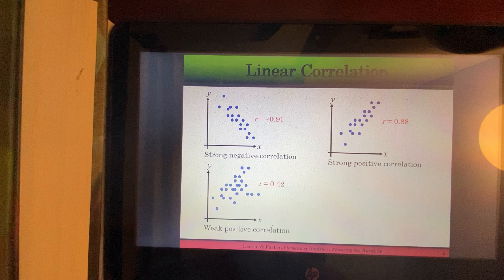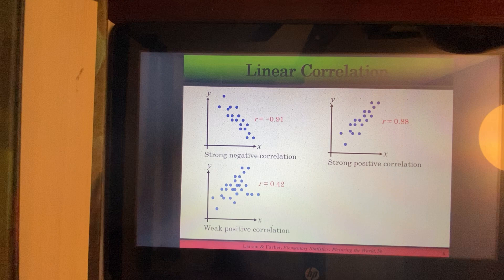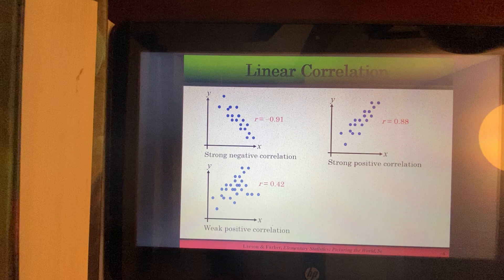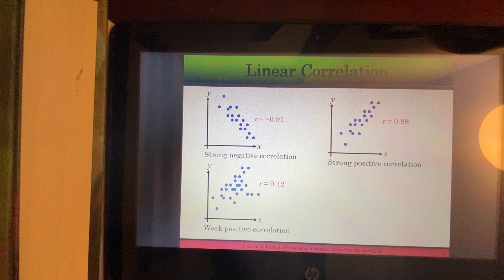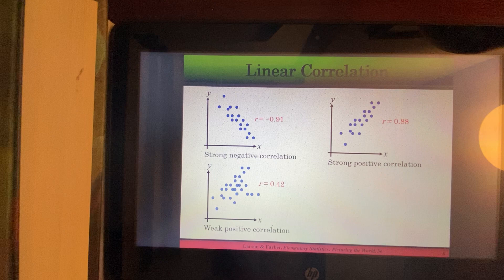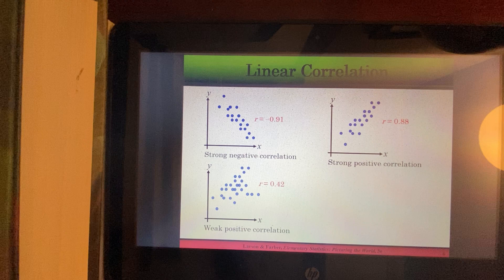Now we're looking at an example of positive correlation because as X is increasing, Y is also increasing. But if we drew a straight line through this data, the points would be farther from the line. So there's more variation going on here. And this would be an example of a weak positive correlation. R is positive 0.42. So we're getting closer to 0, and the closer you get to 0, the weaker the relationship is between your X and Y.